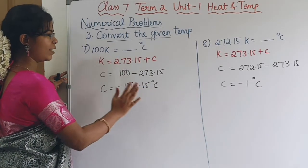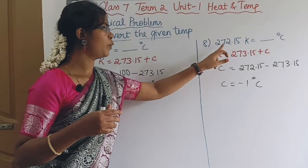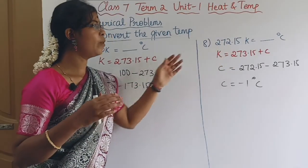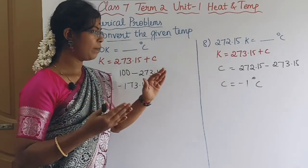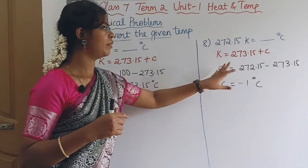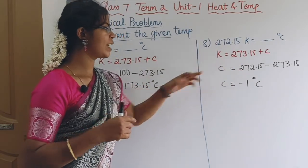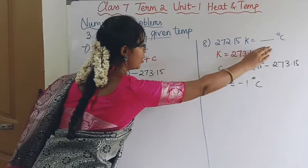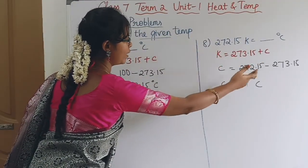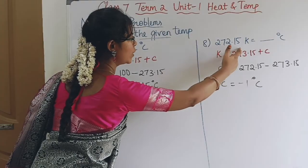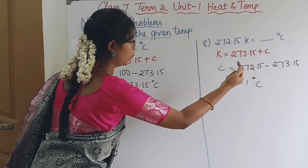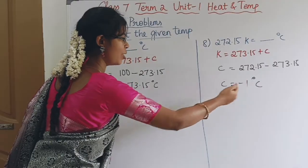Last problem: convert 272.15 Kelvin to degrees Celsius. Using K = 273.15 + C, rearranging gives C = K - 273.15 = 272.15 - 273.15 = minus 1 degree Celsius. So 272.15 K equals minus 1 degree Celsius.